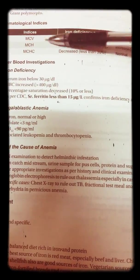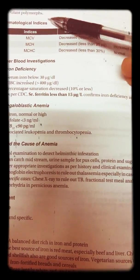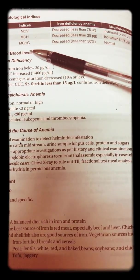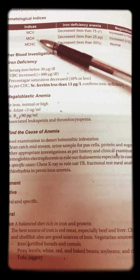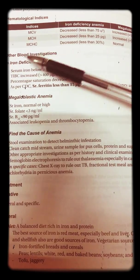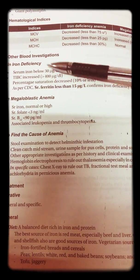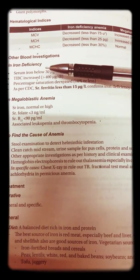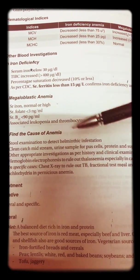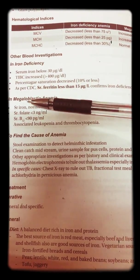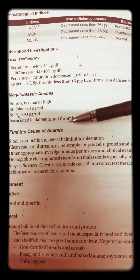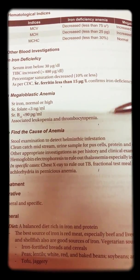In megaloblastic anemia, there is also presence of Howell-Jolly bodies and Heinz morphocytes. Hematological indices MCV, MCH, and MCHC can be measured. For iron deficiency, other investigations include serum iron, total iron binding capacity, percentage saturation, and serum ferritin. In megaloblastic anemia, serum iron, folic acid, B12, and associated leukocytopenia and thrombocytopenia can be tested.